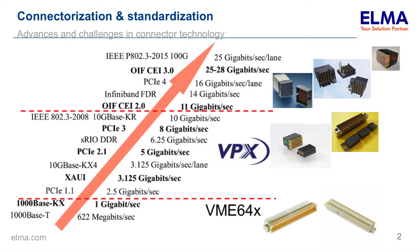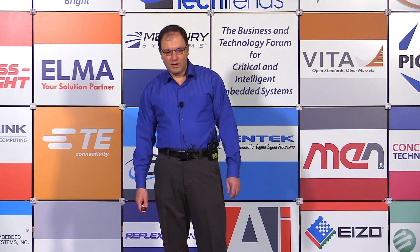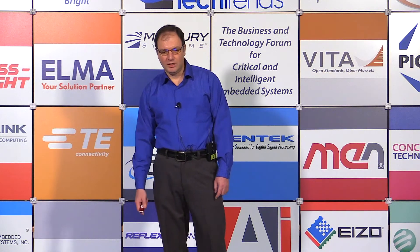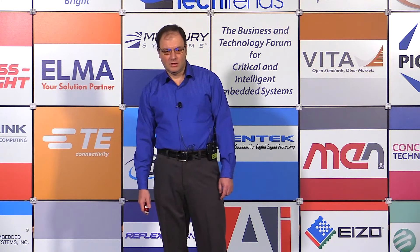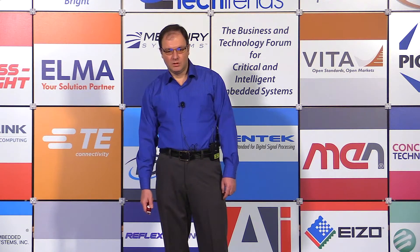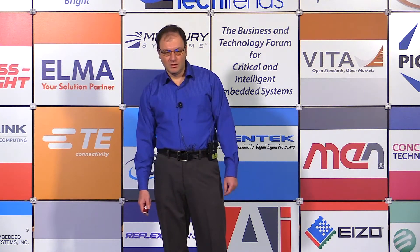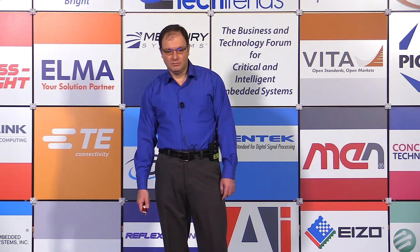Most of you are probably familiar with this picture. As we are scaling up in data rates, the connectors have changed. We're talking about standardizing the interfaces. 25-30 years ago the density was really low, maybe 30-40 pins per square inch. Now we're looking at really high density connectors and data rates approaching what most say is practically feasible over copper: 25-28 gigabits per second.